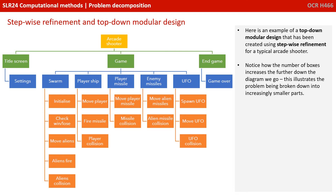Here's an example of a top-down modular design that's been created using stepwise refinement for a typical retro arcade shooter. Notice how the number of boxes increases the further down the diagram we go. This illustrates the problem being broken down into increasingly smaller parts.